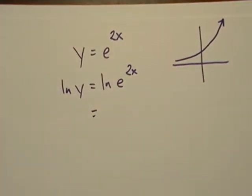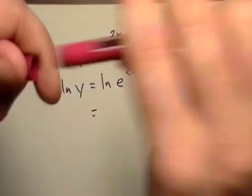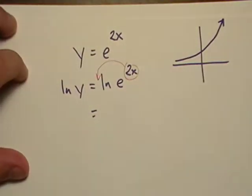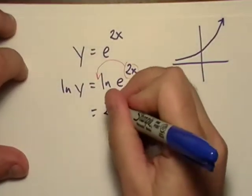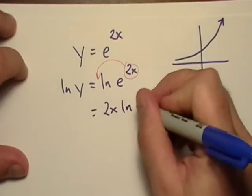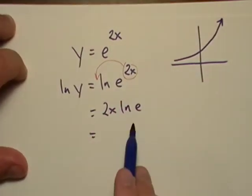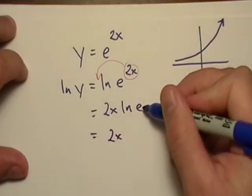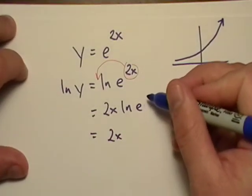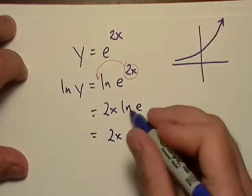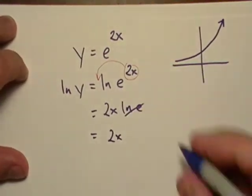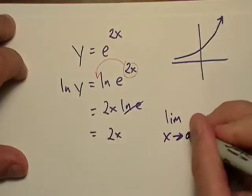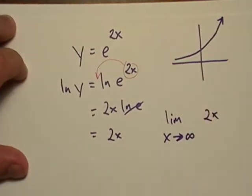Now, remember that power rule. It says that I can take the power of one of those dudes and I can stick it right in front. This simplifies to 2X because E raised to the number 1 is what will give me E, so that just turns into 1. So now I'm really only faced with the limit as X goes to infinity of 2X.